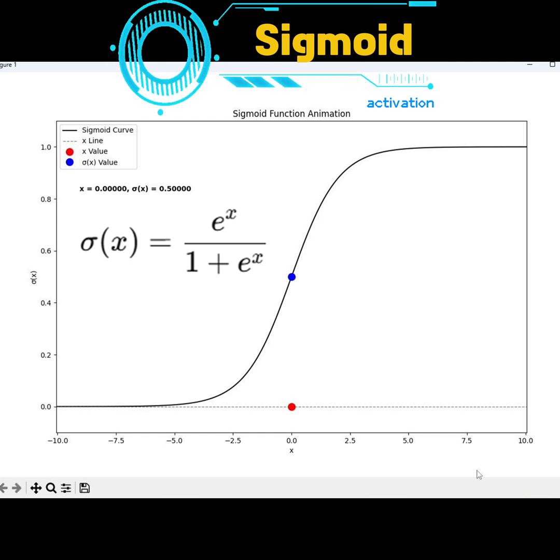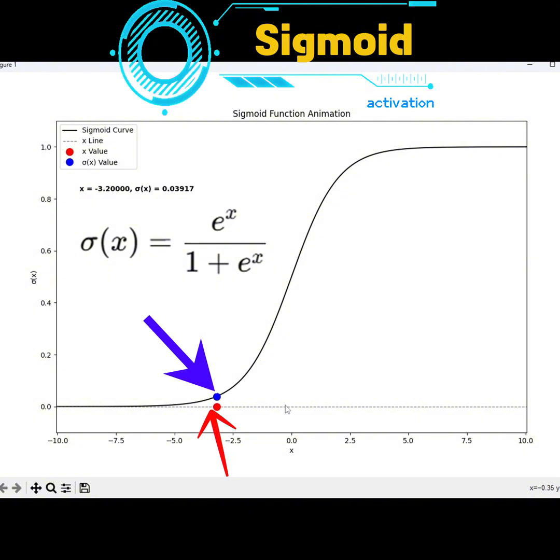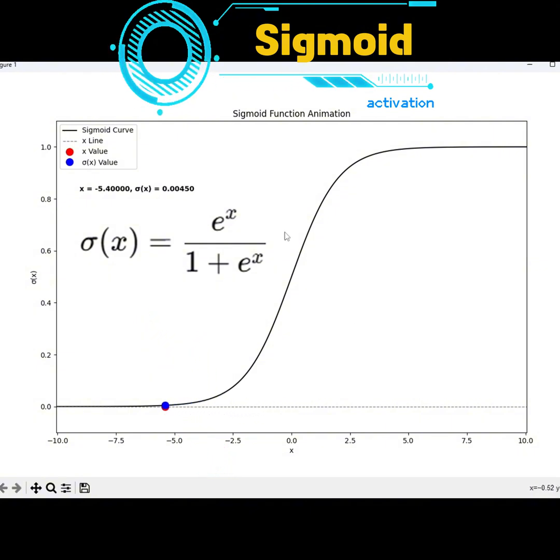Notice how as x becomes more positive, σ(x) approaches one. Similarly, when x becomes more negative, σ(x) approaches zero. This is why the sigmoid function is perfect for binary classification tasks where the output needs to be between zero and one.